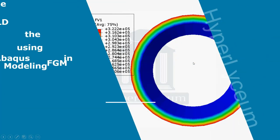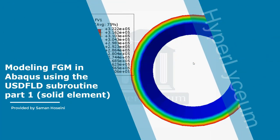Hello and good day everyone, I'm Shadi Ayati and this video was provided by Saman Hosseini from the Hyperlysium team. In this video I'm going to go through modeling functionally graded material, or FGM, in Abaqus using the USDFLD subroutine. This is the first of two videos; I will mesh the cylinder structure using solid elements.